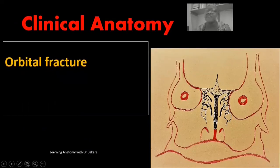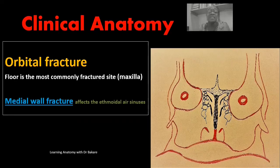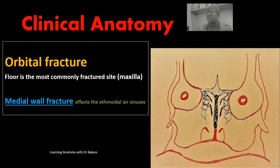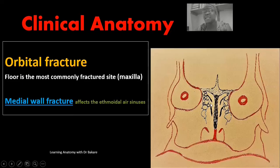In clinical anatomy, orbital fractures involve breakage of the bones forming the orbit. The most common site is the floor of the orbit, where the major structural component is the maxilla. For medial wall fractures, the lateral plate of the ethmoidal labyrinth will be broken, affecting the ethmoidal air sinuses, which are sandwiched between the lateral and medial plates of the ethmoidal labyrinth.